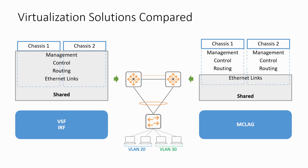With VSX, the concept of primary and secondary switches is introduced, where the primary switch controls what information is synchronized with the secondary switch. With release 10.1, the configuration of VLANs, ACLs and active gateways is now synchronized with the secondary switch, with the primary switch being the master. In other words, when a link aggregation is configured on both switches and on the primary switch you tell it to synchronize the VLANs and ACLs, adding those VLANs and ACLs to the link aggregation on the primary switch will automatically synchronize that configuration on the secondary switch.